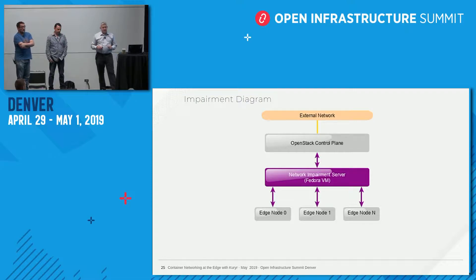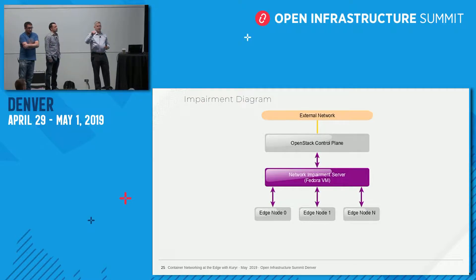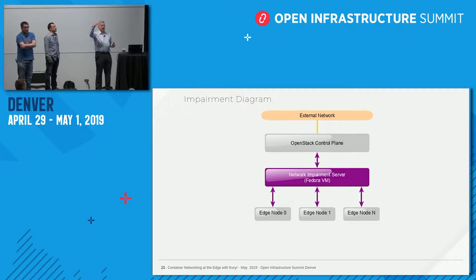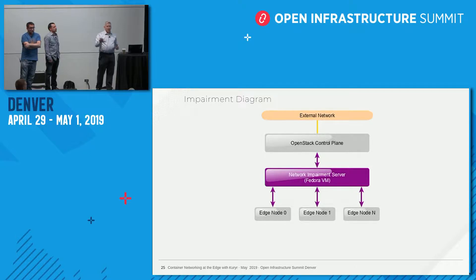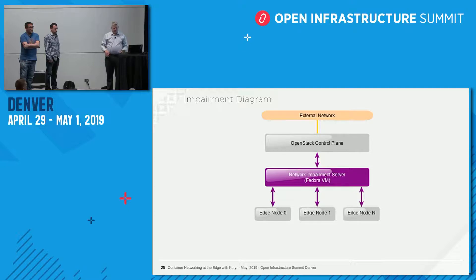This is simply the way we set it up from our external network into the OpenStack control plane. Other than some local compute nodes inside the control plane, everything from there all the way down to the edge — no matter which edge node — ran through the impairment box so it could act as the router and we could drop the network, inject packet delay, jitter, duplication, et cetera. That's how we basically proved out this environment.